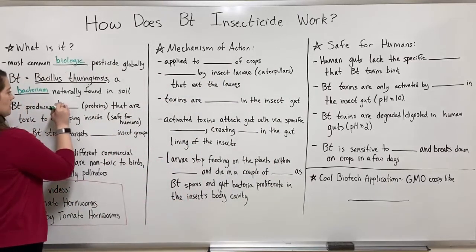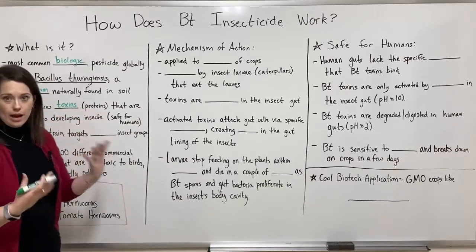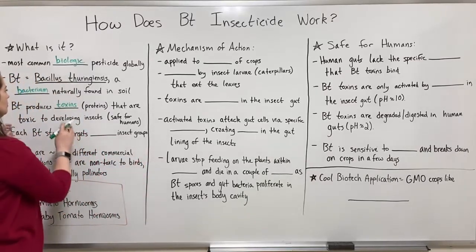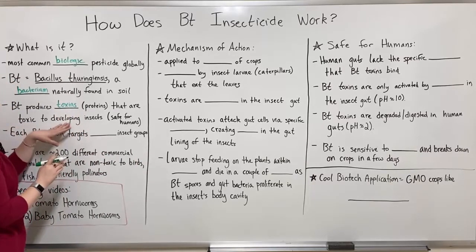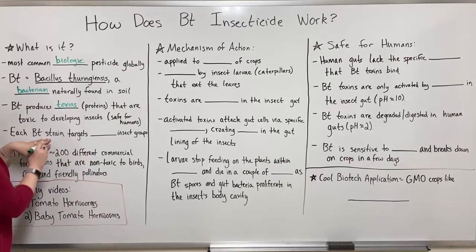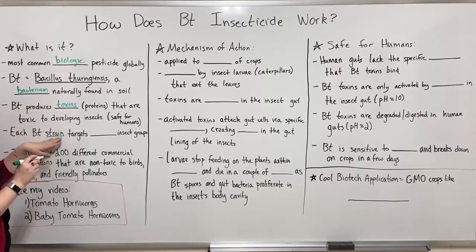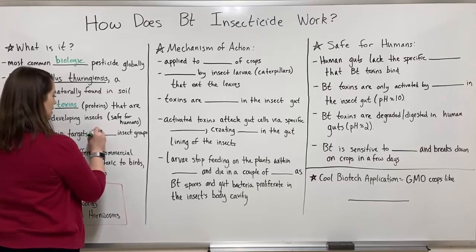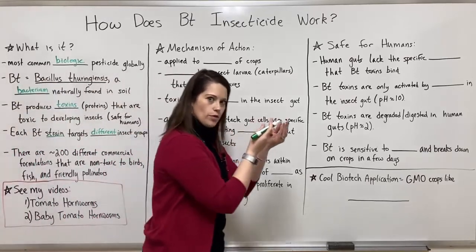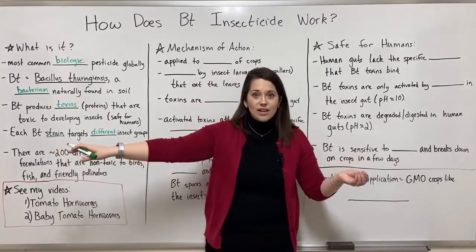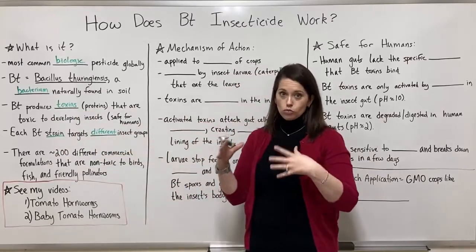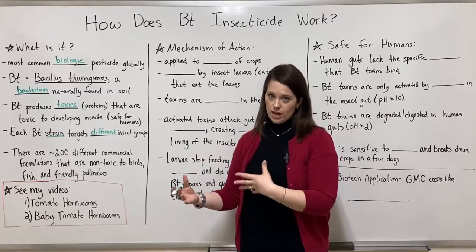BT produces toxins. These toxins are proteins, and they are called toxins because they are toxic in certain circumstances — specifically, they are toxic to developing insects, though totally safe for humans, as I'll explain. Each BT strain targets different insect groups. There are strains of BT that are toxic to one group of insects and don't hurt any others, and different strains target different insect groups depending on the strain.